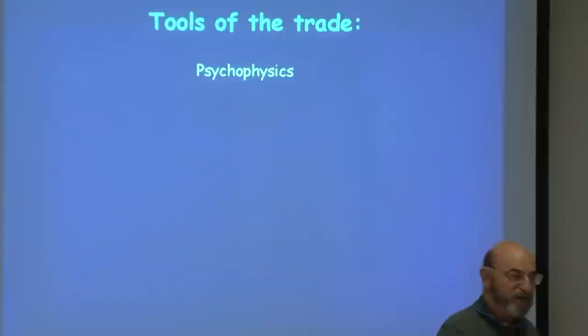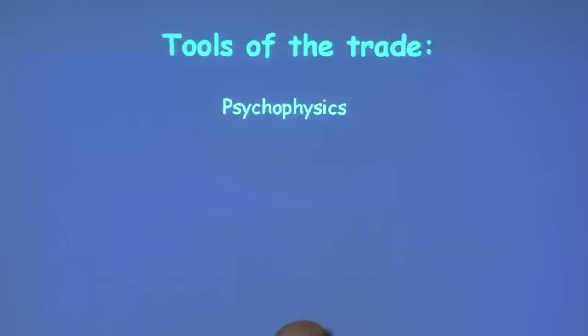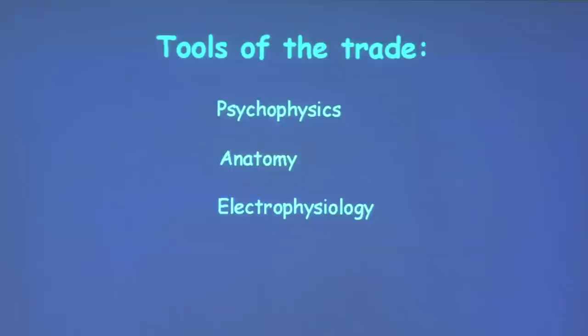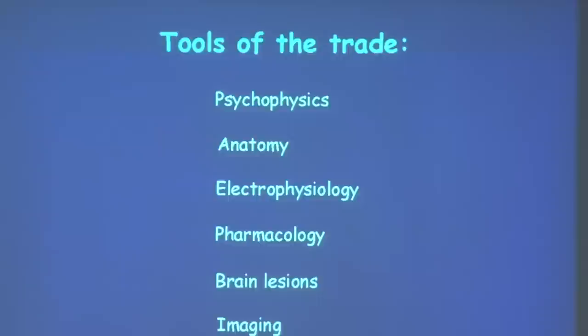I'll talk about each method briefly this time, and they will come up repeatedly during all of the lectures. The first method I'm going to talk about is called psychophysics — it's a scientific way to study the behavior of humans and animals to determine how well they can see. I will then talk about anatomy, electrophysiology, pharmacology, brain lesions, imaging, and optogenetics.